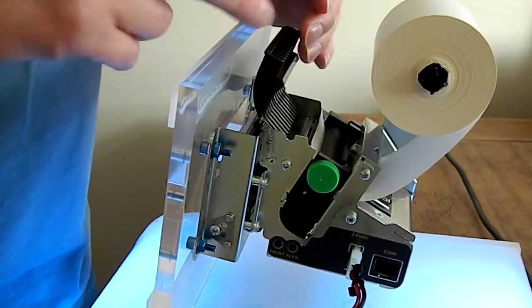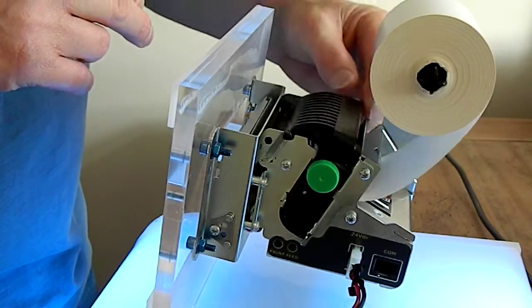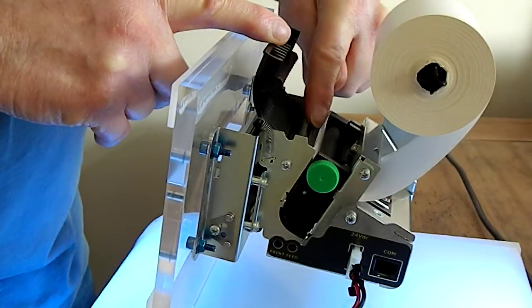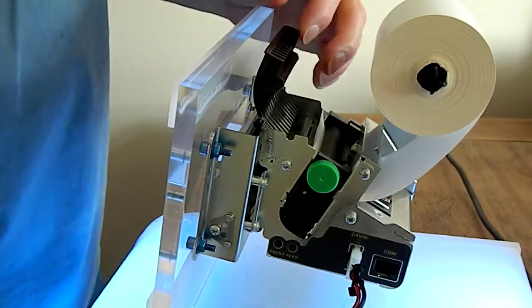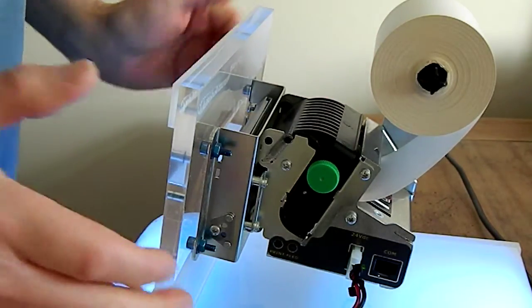There's a flap here with an optical sensor underneath that can detect when it's lifted, and there's a serrated blade under here that can cut the paper if you're pulling it before it's finished printing. Let me show you how this works.